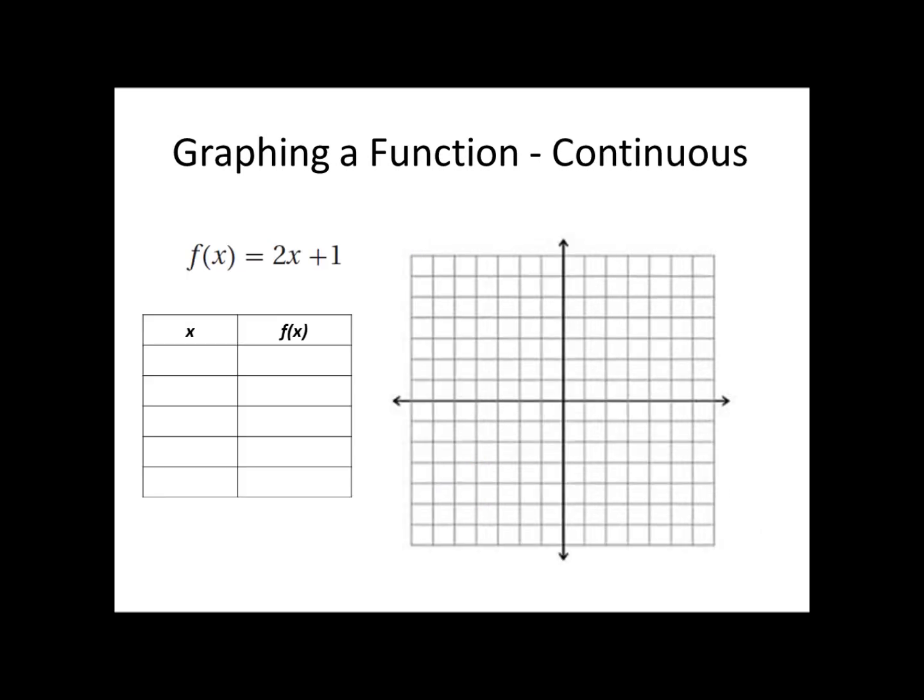If they give us an equation, that's going to create, instead of a discrete graph, what we refer to as a continuous graph. Now when you're making a continuous graph, right now you have to make a table of values in order to make the graph. I want to see that table of values on your paper, next to the graph that that table of values creates.